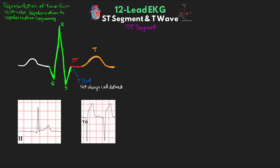Here are two examples of different J points. The first is a sharp J point, meaning it's really easily identifiable — the transition from our QRS complex to our ST segment is well-defined, and we can easily identify the J point. The second we refer to as a diffuse J point. With this one, it's less clear exactly where the QRS ends and the ST segment begins. The transition is a slow and sloping one, making it hard to determine the exact spot where the J point takes place. We can identify the general area of transition, but we can't identify the exact location.